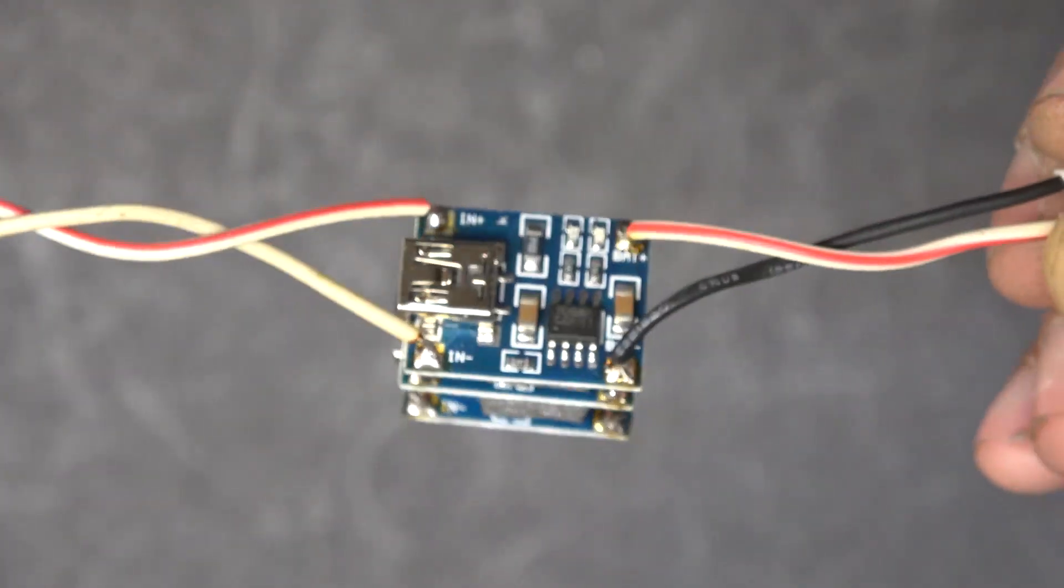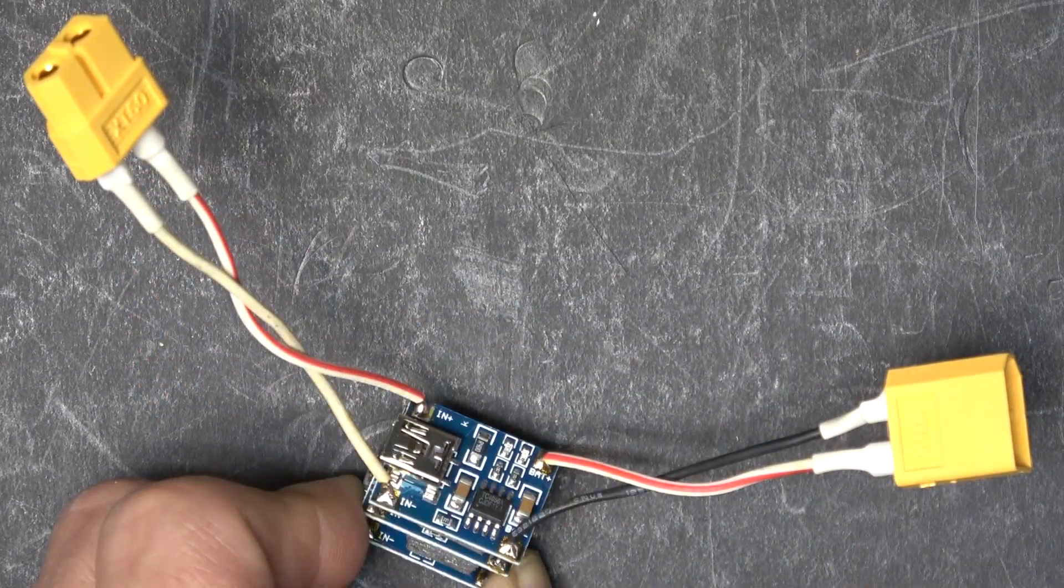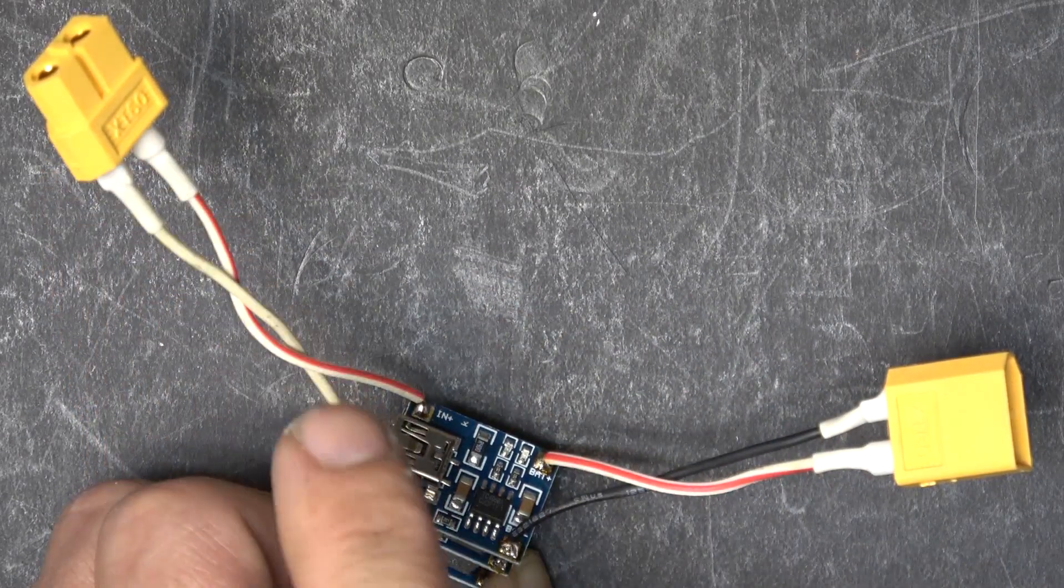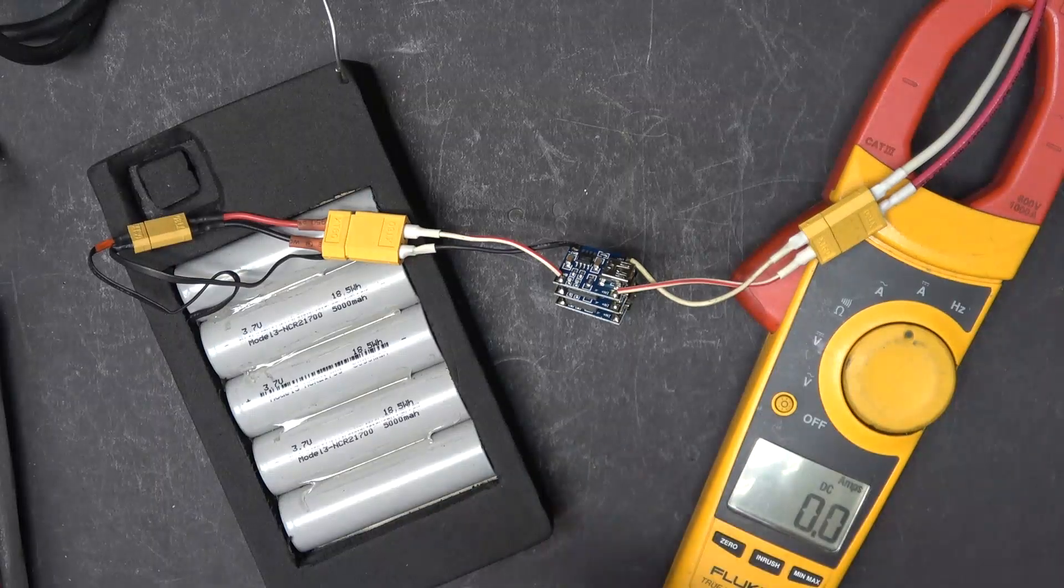Alright, here we go. I've got it all soldered together. I've got XT60 connectors on both sides. This is the input side from the power supply. That's the output to the battery.